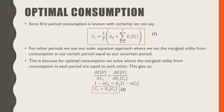For all other periods, we use the Euler equation approach, where we set the marginal utility from consumption in our certain period equal to our uncertain period. This is because for optimal consumption, we solve where our marginal utilities from consumption in each period are equal to each other. We take the partial derivative of our expected lifetime utility with respect to consumption in period 1, and set it equal to the partial derivative with respect to expected consumption in period t. Doing this, we end up finding that C1, the consumption in period 1, is equal to the expected consumption in period t based on the information in period 1.